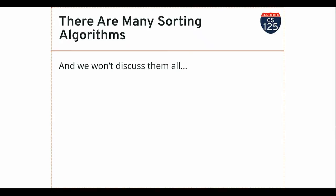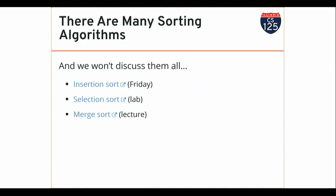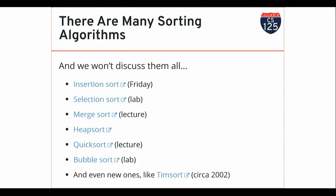There are many ways to sort things — we won't cover all of them. We'll look at insertion sort on Friday, selection sort in lab next week, merge sort and quick sort in lecture, heap sort online, and bubble sort in lab. There's also a new sorting algorithm — about 17 years old — called Timsort. It's named after its inventor Tim. Timsort is the standard sorting implementation in both Python and Java.